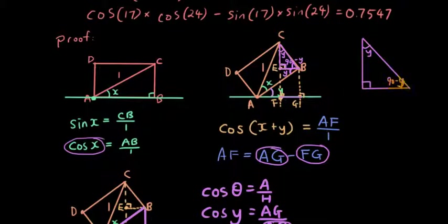So continuing from that, we are trying to work out the length of EB, because we are trying to prove what EB is, because EB is the same as FG. So let's use the sine ratio. So sine theta is opposite over hypotenuse. Sine of y, so using this angle as theta, equals opposite, which is EB, divided by the hypotenuse, which is CB.